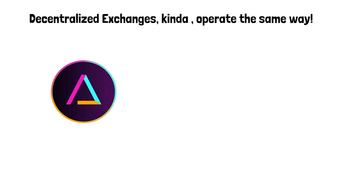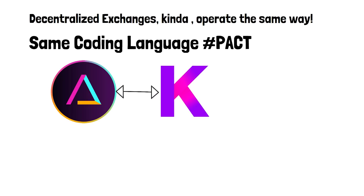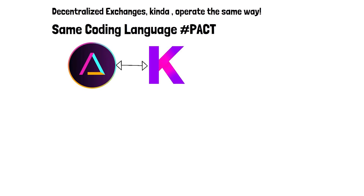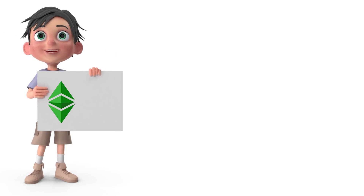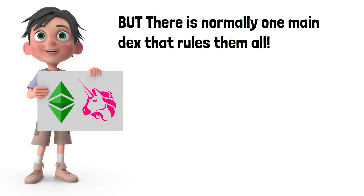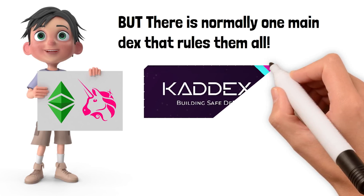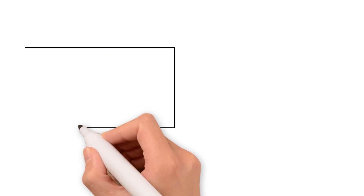Decentralized exchanges operate the same way. Because KadeX is built using the same coding language as the Kadena blockchain, the KadeX DEX is designed to communicate with Kadena. There are normally several DEXes built on every crypto ecosystem — Ethereum has Uniswap, SushiSwap, and 1inch — but there is normally one main DEX that rules them all, and I think KadeX is going to be that DEX on Kadena.